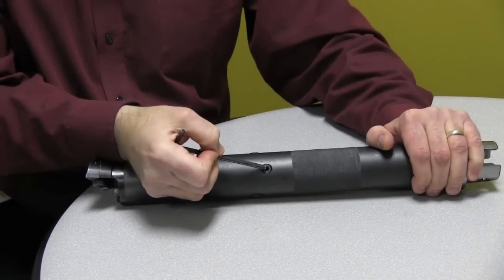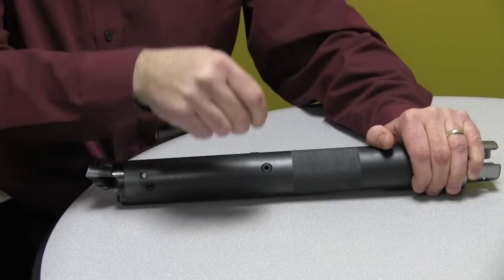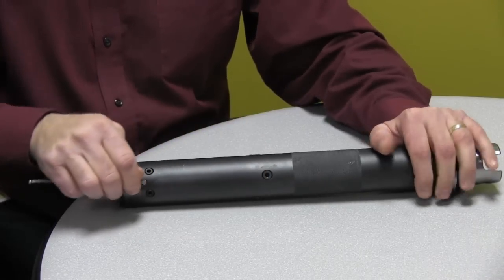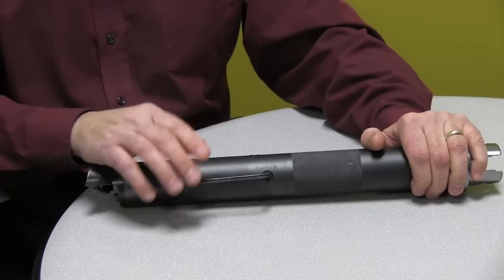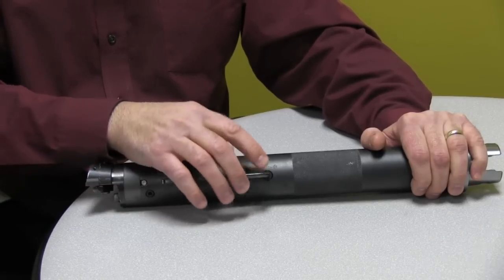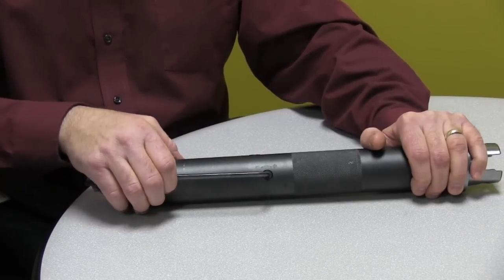Now here's your adjustment screw, you'll see the plus and minus side, and I'll get into that a little bit later. So the first thing we're going to do is turn this bar the whole way in, turn this adjustment screw the whole way in until it locks down.